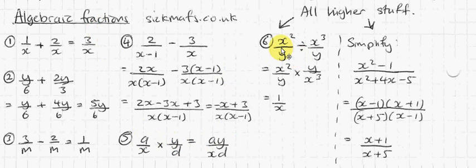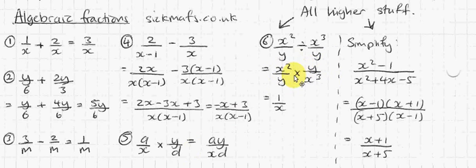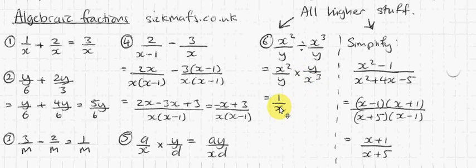Dividing means just flip the second fraction and turn it into a multiplication. Now I've got a more complicated version here, because I can cancel a little bit. The y's cancel. The x squared cancels with x cubed — that power is higher than that, so it overcomes this and you've just got x on the bottom. All the x squareds are being cancelled completely, and you've got an x remaining there.